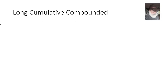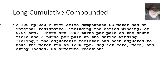Now we work with a long cumulatively compounded motor: 100 horsepower, 250 volts. Cumulative (additive) compounding means the series coil MMF aids the field coil MMF. The internal resistance RA plus RS equals 0.04 ohms. NF is 1000 turns per pole, NS is 3 turns per pole. The motor is idling (P_out = 0), and the adjustable resistor has been set so the speed is 1200 RPM.